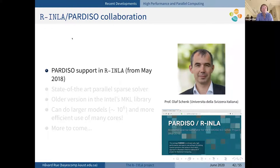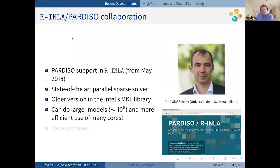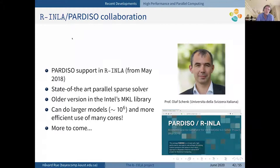We are also working towards high performance computing through a new collaboration with the Pardiso library for sparse matrix computations — essentially state-of-the-art parallel sparse matrix solvers. This allows models on machines with on the order of millions of unknowns, which we need for space-time models.